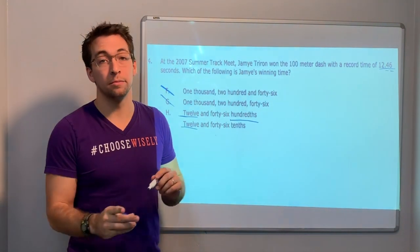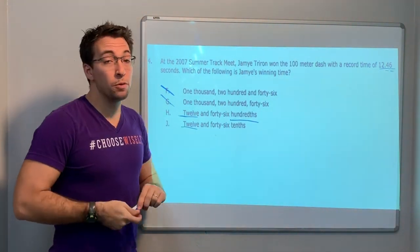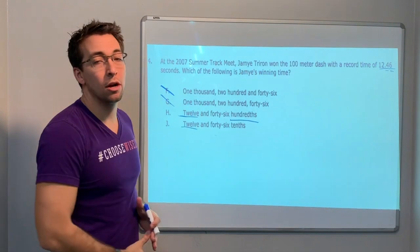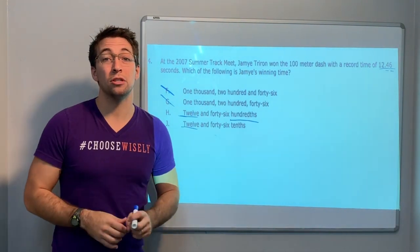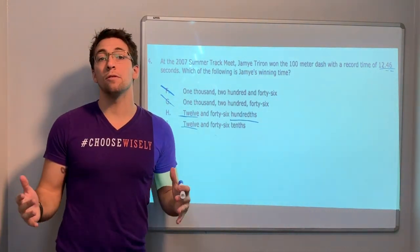Twelve, right? So it's not F, not G. Twelve and forty-six hundredths because there's two decimal places. Guys, hope you like these videos. We're going to try to do quick videos. I want you to watch, I want you to practice these STAR type questions. Let me know what I can do for you. Have a great day.